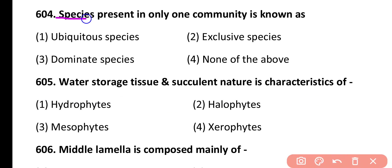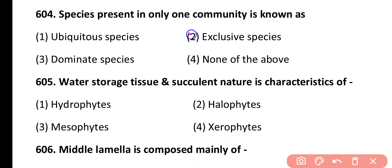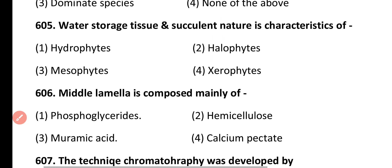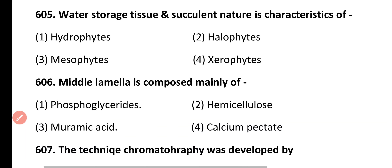Question 604. Species present in only one community is known as: ubiquitous species, exclusive species, dominant species, none of the above. Correct answer is option 2. Exclusive species are present only in one community.